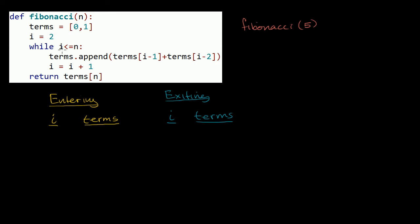I'm going to focus on what happens in this loop. As we enter the loop for the first time, terms is a list that has just 0 and 1 in it. We did that because, by definition, those are the first two terms of the Fibonacci sequence. Also entering into the loop, we define i as equal to 2, because we've already defined the 0th term and the first term, and now we want to add the second term as we go into the loop.